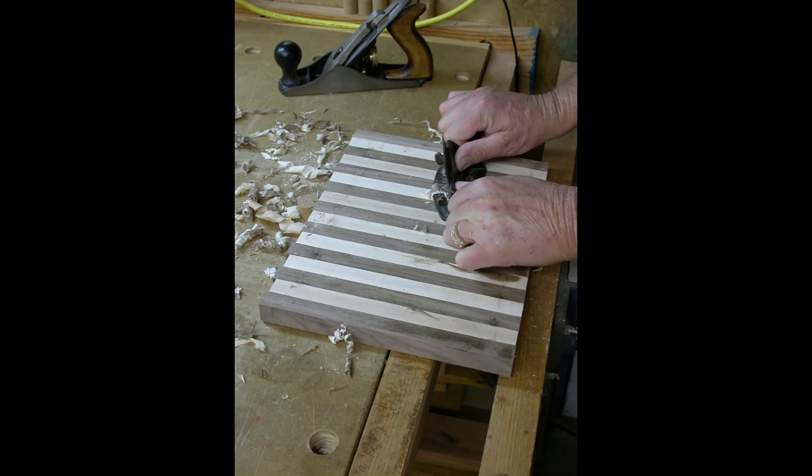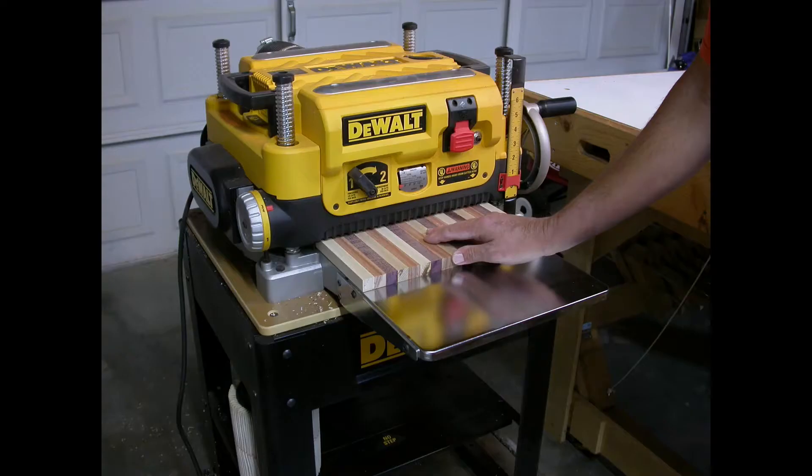Once the glue ups have cured remove them from the clamps and scrape and plane one side reasonably flat in preparation for milling. Now plane the glue ups to three quarters of an inch. Be sure and alternate sides so you get both sides of the glue up good and flat.